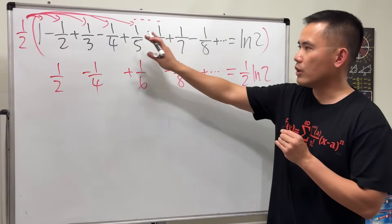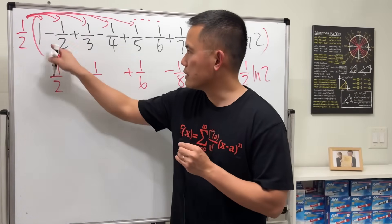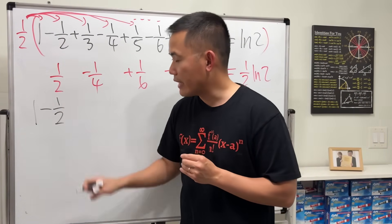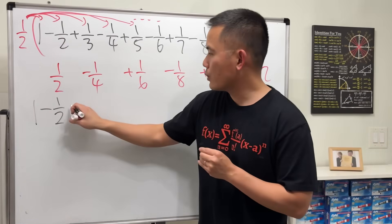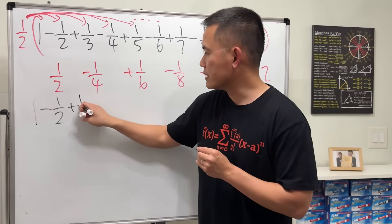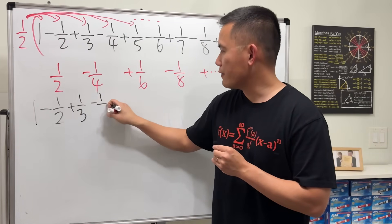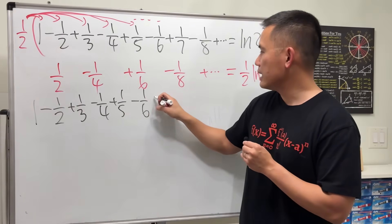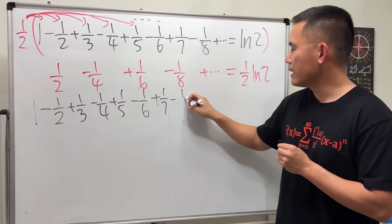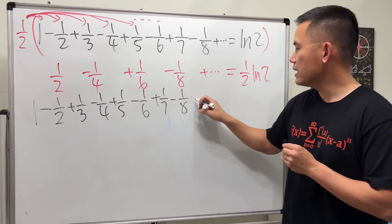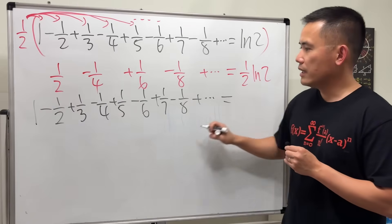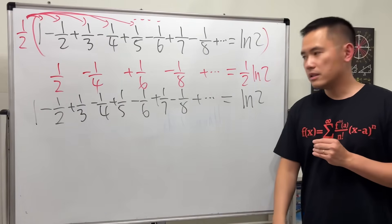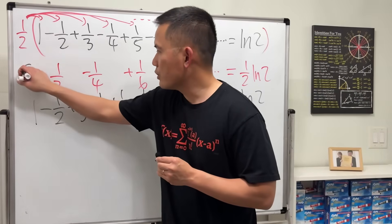Now write the original series again: 1 minus 1/2 plus 1/3 minus 1/4 plus 1/5 minus 1/6 plus 1/7 minus 1/8, and so on, and this version equals ln(2). Now we add these two series together term by term.